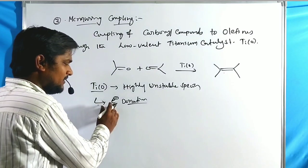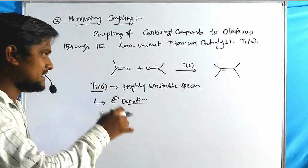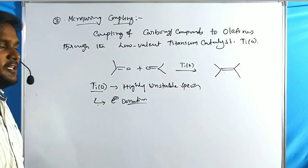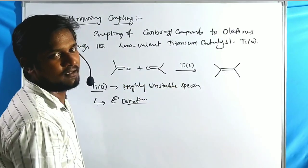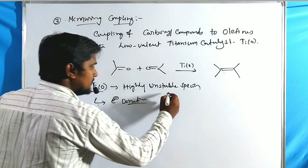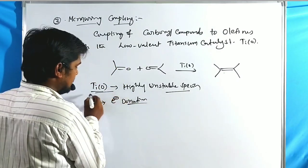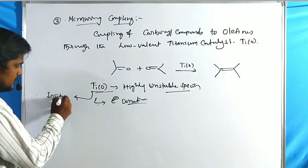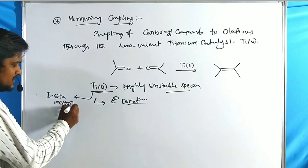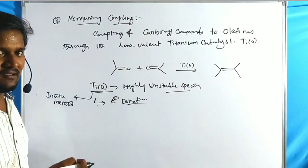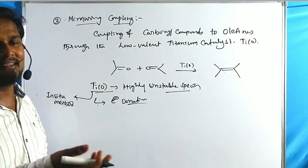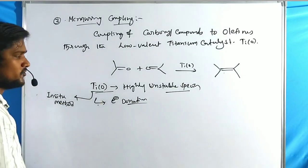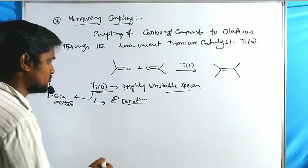Although titanium zero donates electrons, it is very highly unstable and cannot be stored for several days. That's why the titanium zero catalyst is prepared by the in-situ method — meaning the reagent is prepared during the reaction itself.